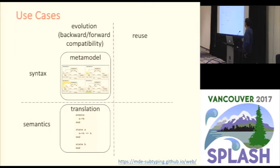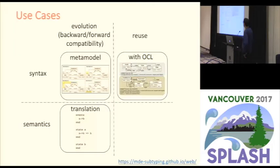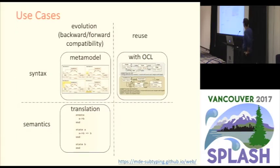We want to make sure that posterior versions can still reuse or preserve that semantics. Another use case is when the metamodels are independent of each other but still have some intrinsic similarities, like the similarities between deterministic state machines and function graphs.